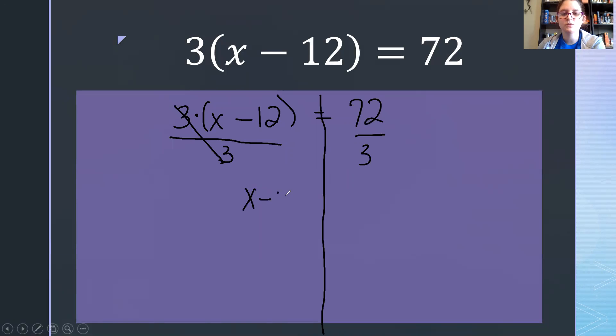So we're left with x minus 12 equals 72 divided by 3. Let's work it out over here. 3 goes into 72. 3 goes into 7 two times. That's a 6. Bring down my 2. 3 goes into 12 four times. 12 nothing left over. So we have 24.